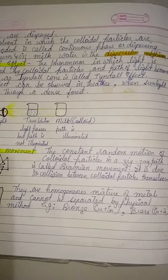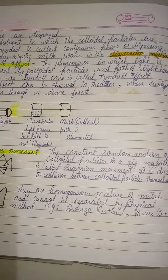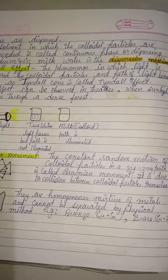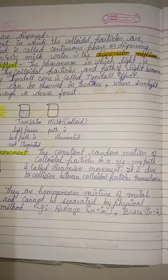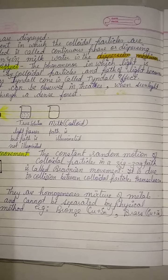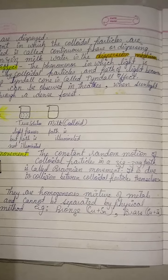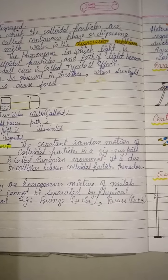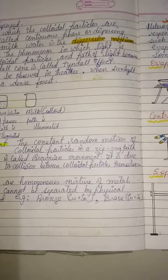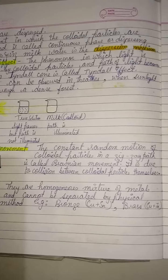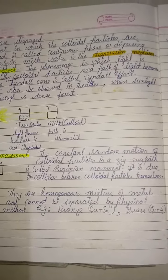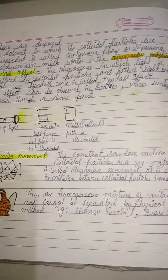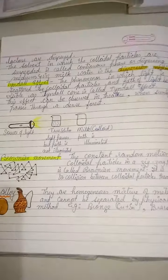Brownian movement is the random zigzag motion of colloidal particles or dust particles. This random motion of colloidal particles moving in a zigzag path is known as Brownian movement. It was discovered by a scientist named Brown, and hence it is known as Brownian movement.